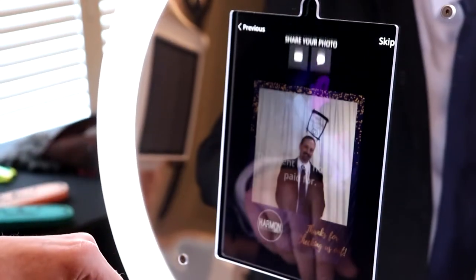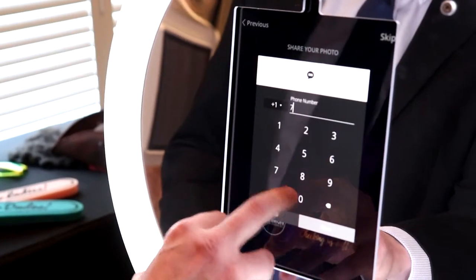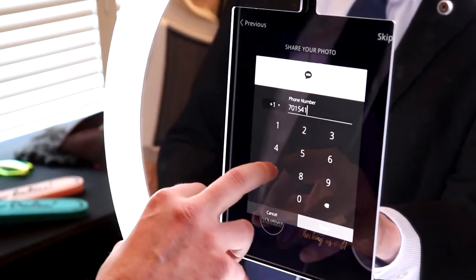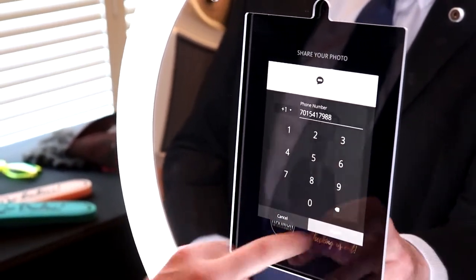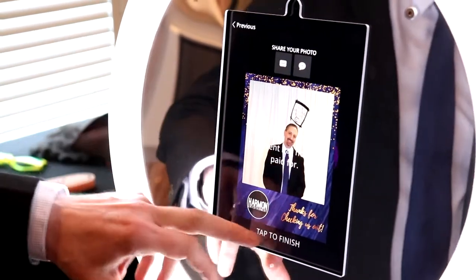You go to next and you get to text it to yourself or email. So type in the phone number. 7-9-8-8. Hit share and your guests automatically get that picture. So that's kind of cool. So now we're done with that one.